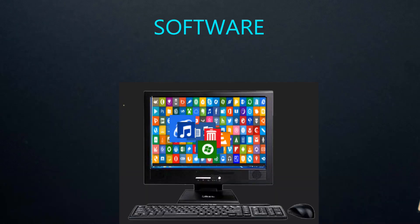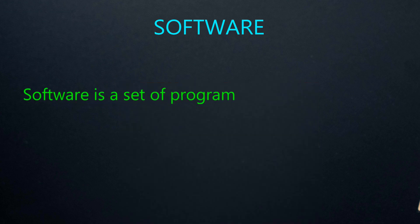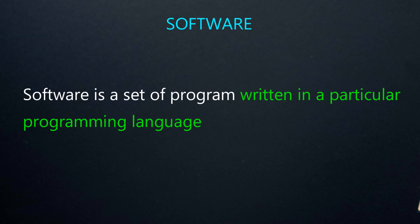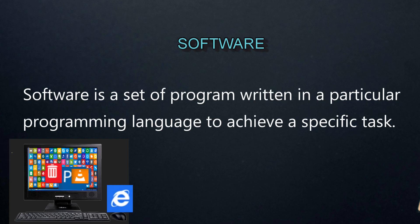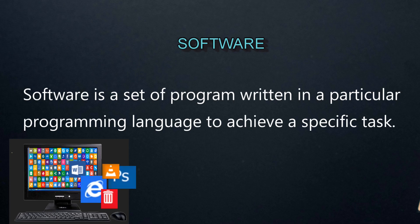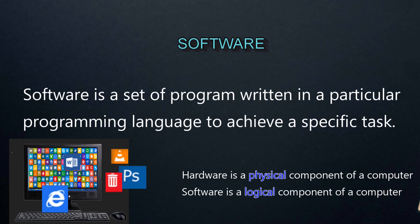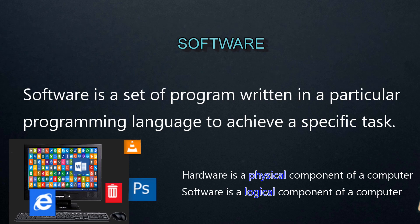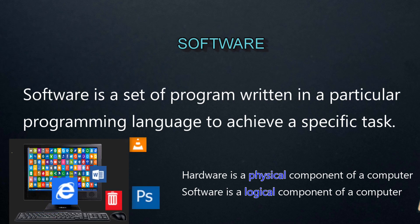Now, we are going to study software. Software is a set of programs written in a particular programming language to achieve a specific task. When we switch on a computer, you can see so many icons on the desktop. All these icons represent different software. Hardware is a physical component, but software is a logical component of a computer — that is, software is a set of programs, and we use programming languages for making software.